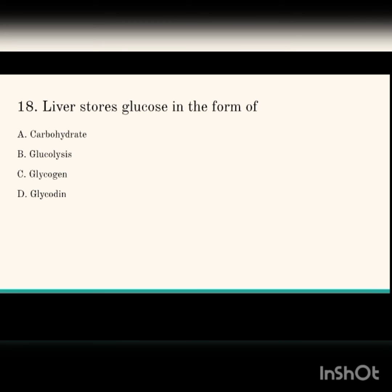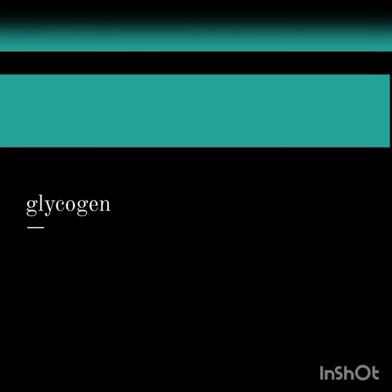Next question: the liver stores glucose in the form of what? The options are carbohydrate, glycolysis, glycogen, and glycoside. The answer is glycogen.